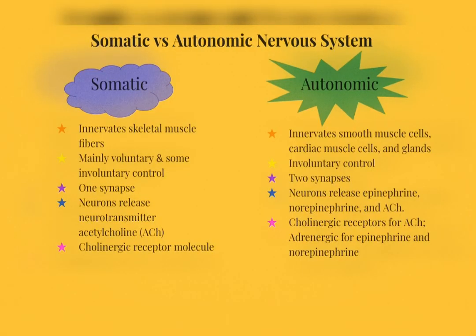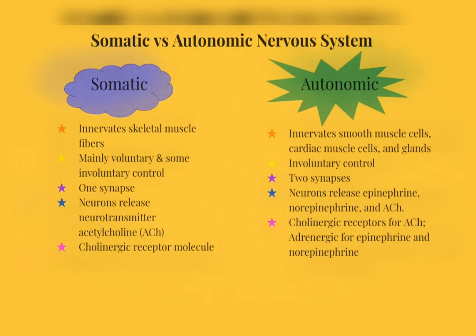Comparing the somatic division to the autonomic division: somatic nerves innervate skeletal muscles and produce voluntary actions, but some involuntary actions as well. Within the somatic division, you'll find only one synapse before the nerve reaches its target cell. The autonomic division innervates smooth and cardiac muscle cells and regulates glands, produces involuntary actions, and has two synapses.